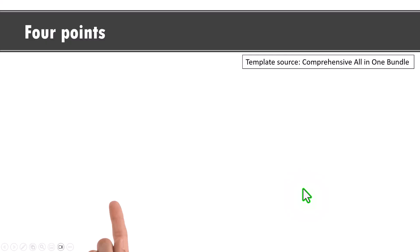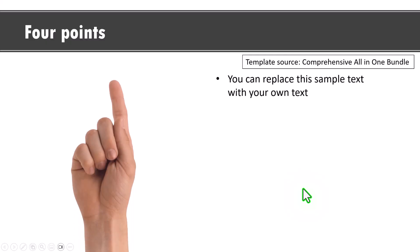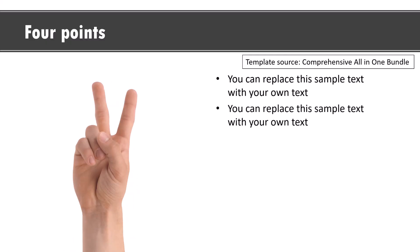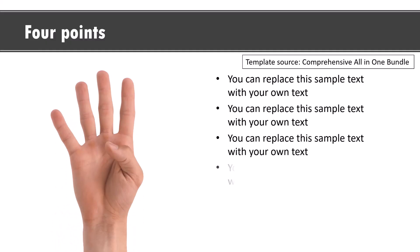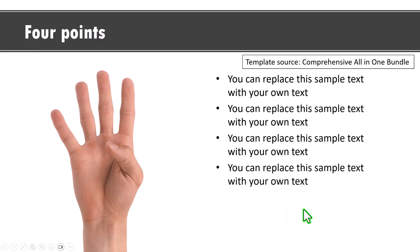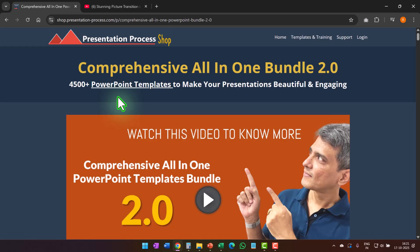The next template showcases four icons and text — on a click, the first icon is introduced with its explanation, and you keep doing that for each icon. It's a very interesting animation that catches the audience's attention. Then there's a template showcasing four points using photos of a hand with four fingers — a dramatic way to talk about four points.